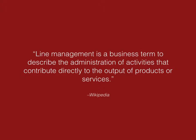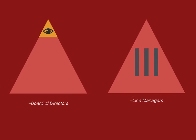If we want to think of this visually — in the last video I spoke about the board of directors, who were like the golden triangle that oversees everything in the business. The line managers are almost the guys controlling the vertical production lines within the company. They're like the engine room, making sure everything works.